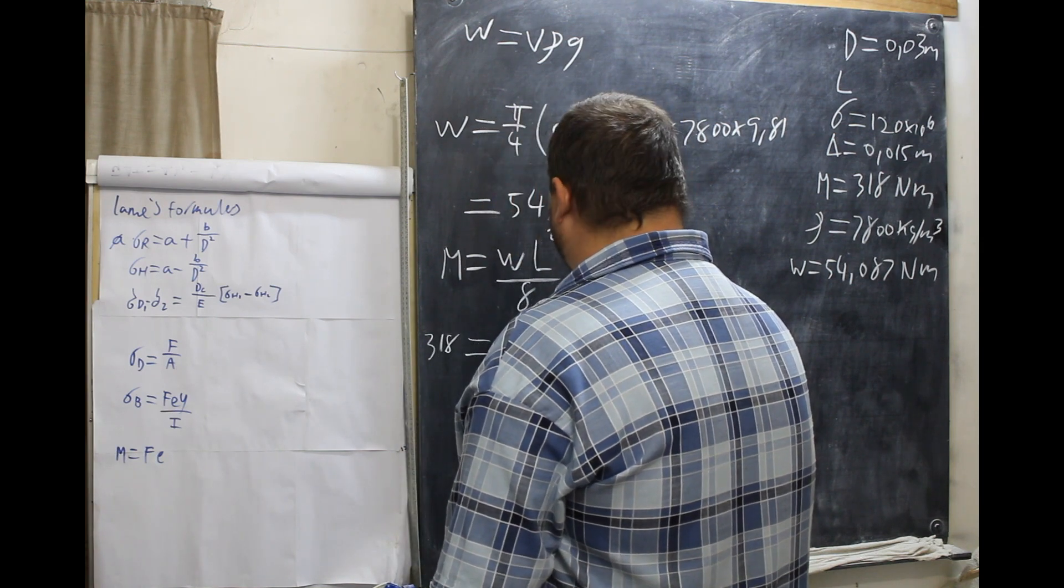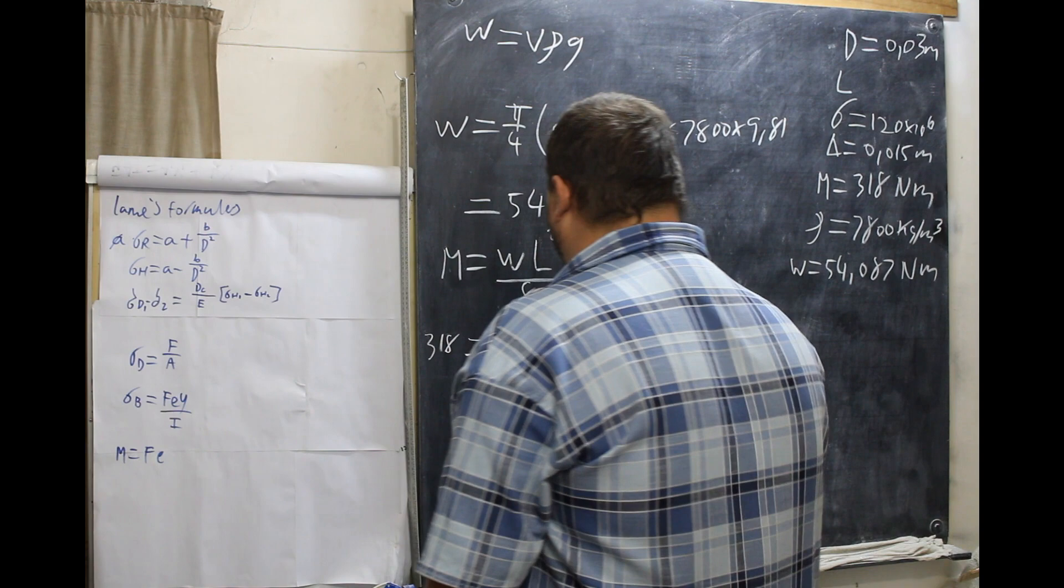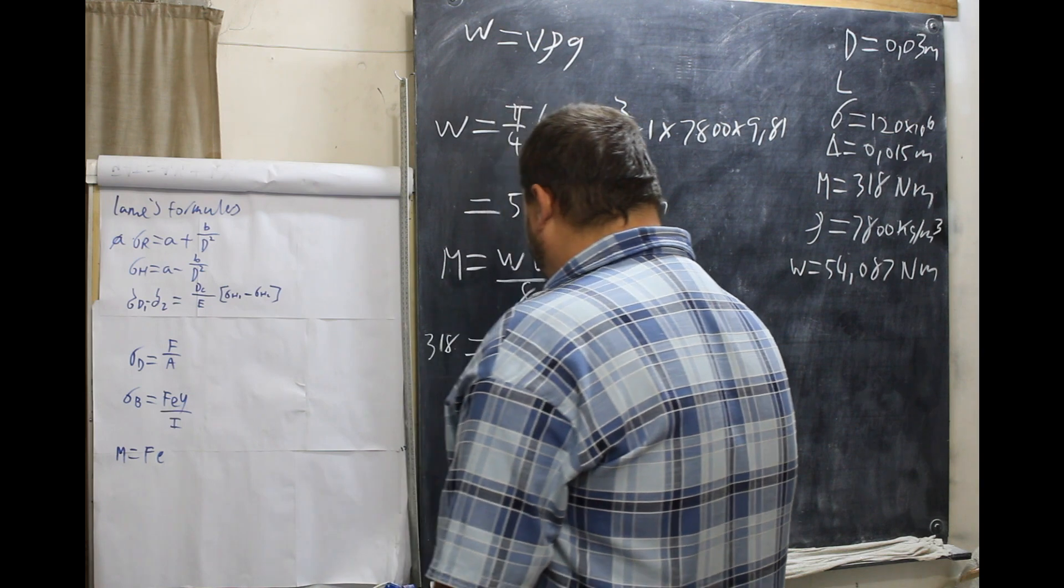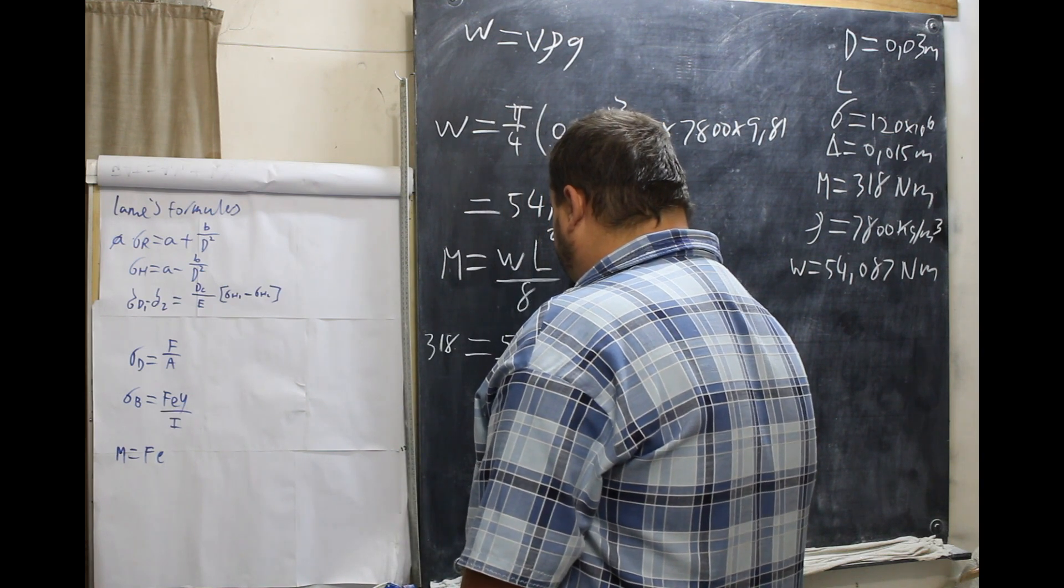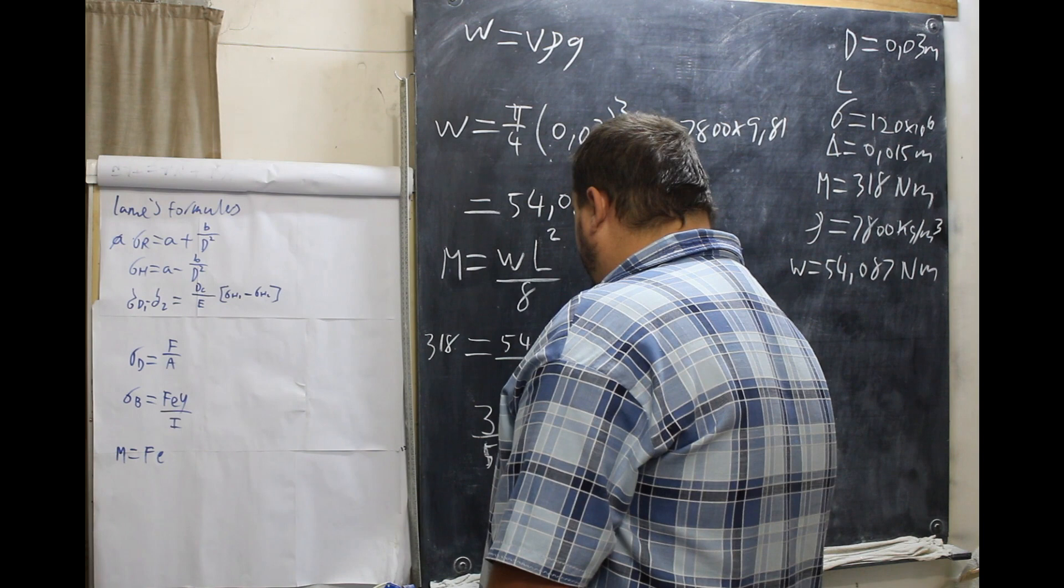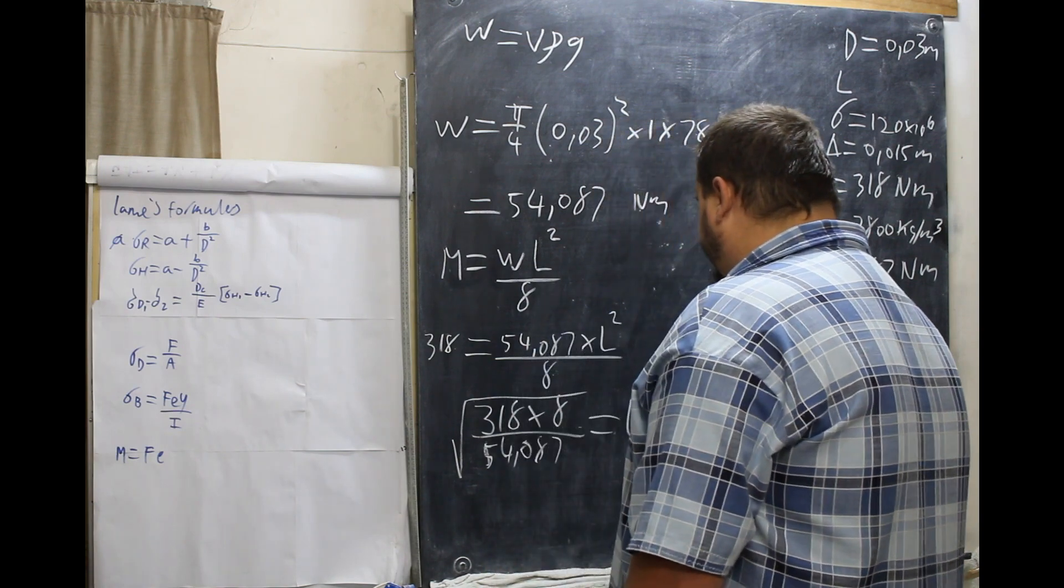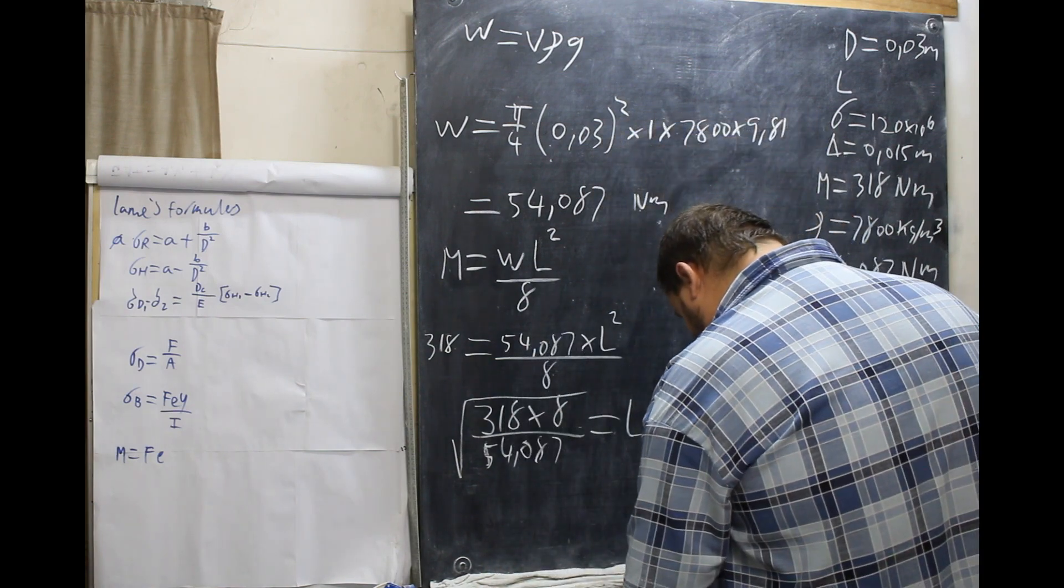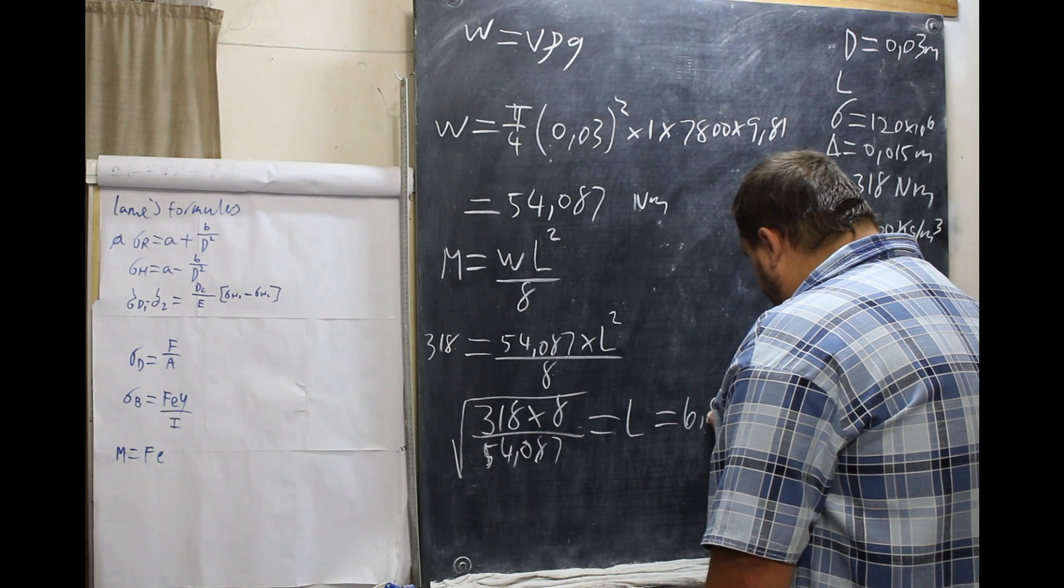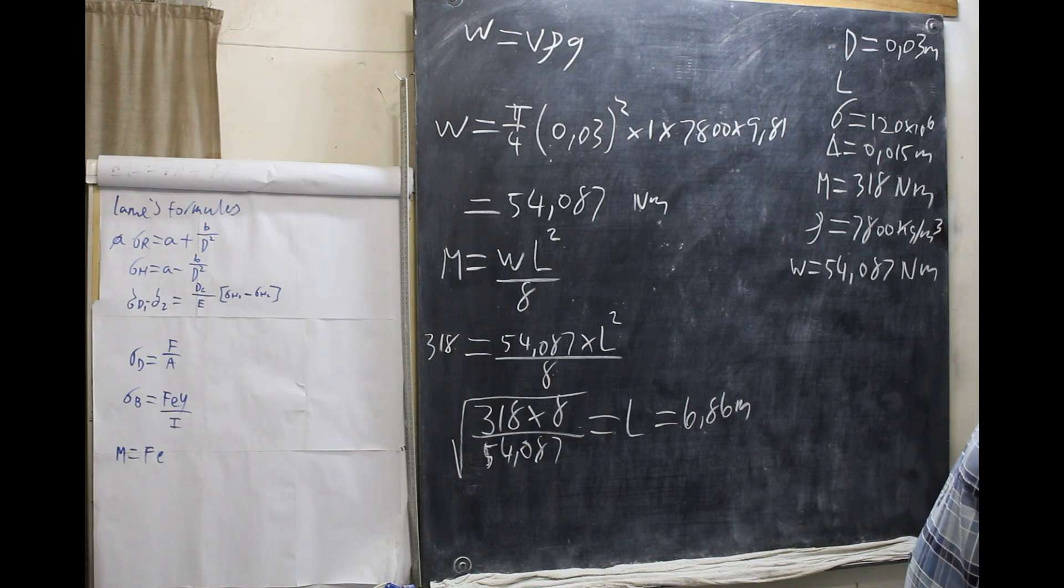We have weight, which is 54,087 times L squared, all over 8. So, we multiply by 8. 318 times 8 divided by 54,087, the root thereof equals L. And L equals 6.86 meters.